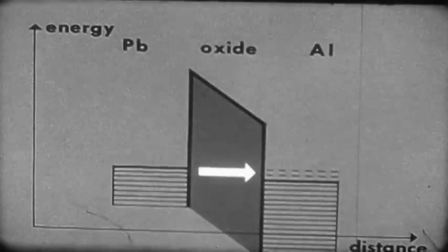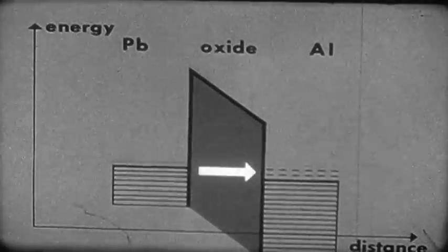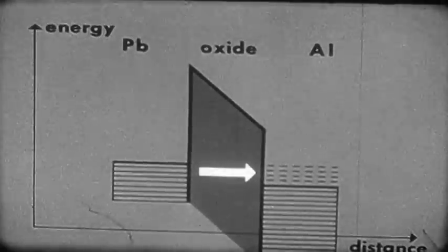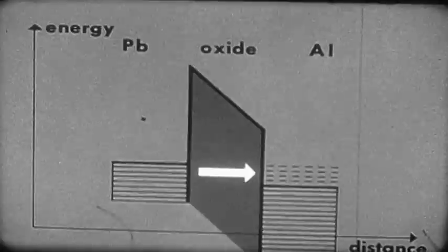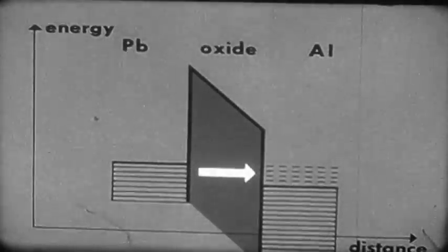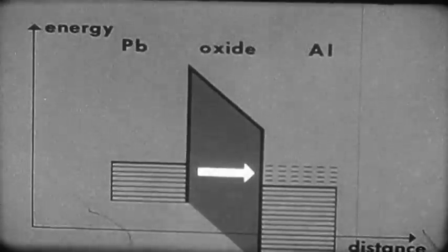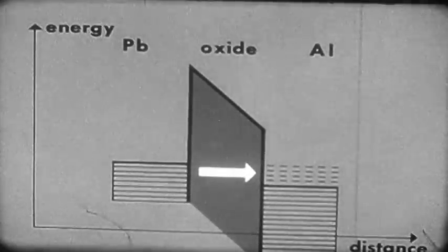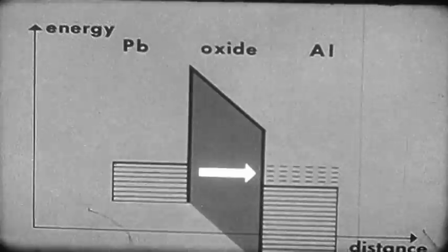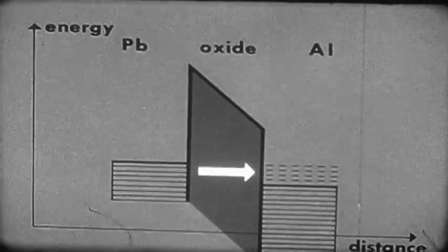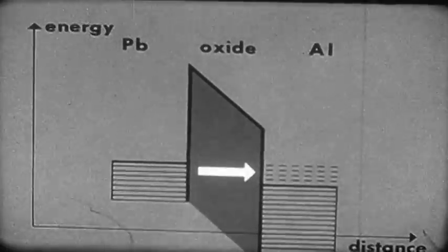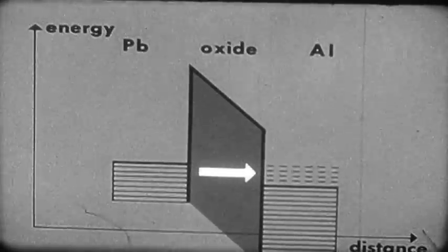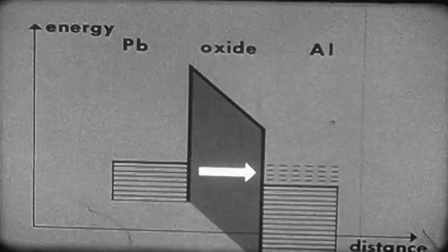Next, let us suppose that we apply a slowly increasing voltage across the junction from the outside with the help of a battery. This is exactly what we did in our last experiment. It further raises the energy of each electron on one side while lowering the energy of the electrons on the other. Now we can see why, in our last experiment, a current flowed through the oxide layer when a voltage was applied across the junction.